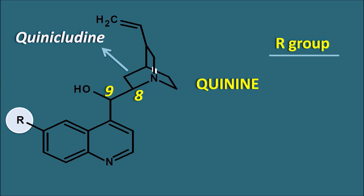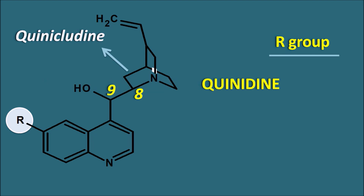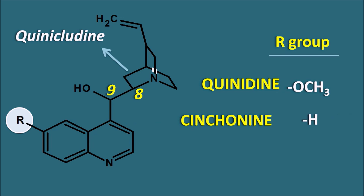Based on the R group, we have two main drugs: quinine, which has the R group as OCH3 (methoxy), and cinchonidine, which has hydrogen as the R group. Quinine and cinchonidine both have the 8S9R configuration. The other pair are quinidine — also having OCH3 at the 6th position — and cinchonine, having hydrogen. Quinidine and cinchonine have the 8R9S configuration, completely reverse to quinine and cinchonidine. Quinine and quinidine are enantiomers; cinchonidine and cinchonine are also enantiomers.